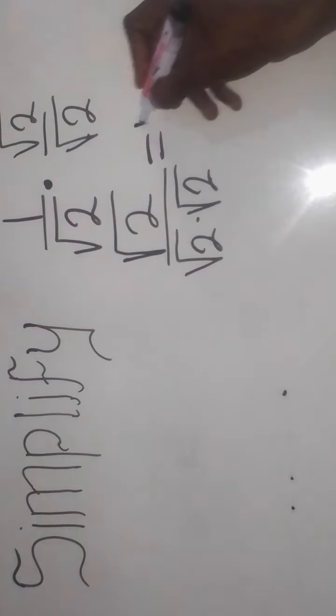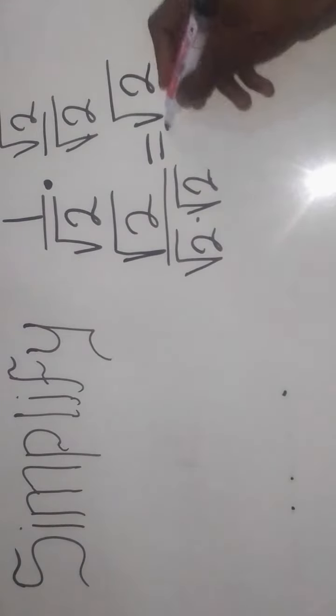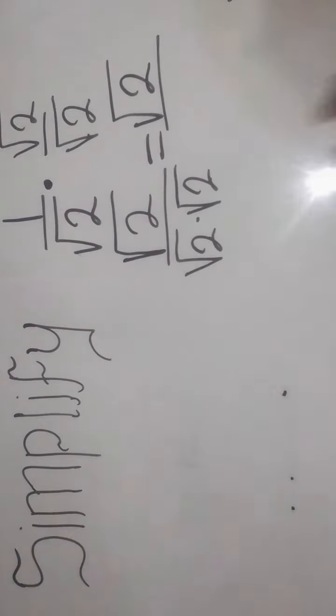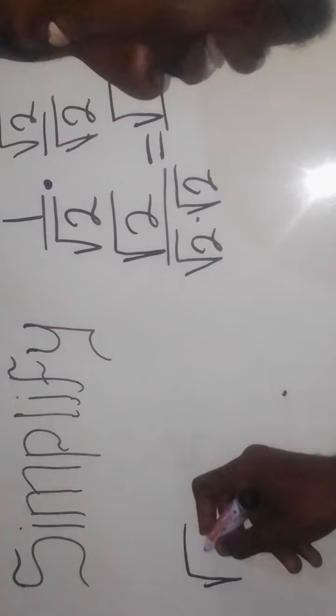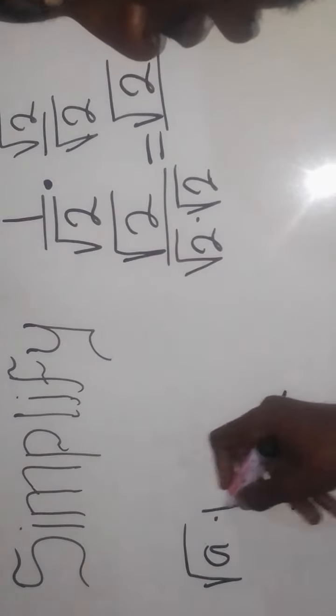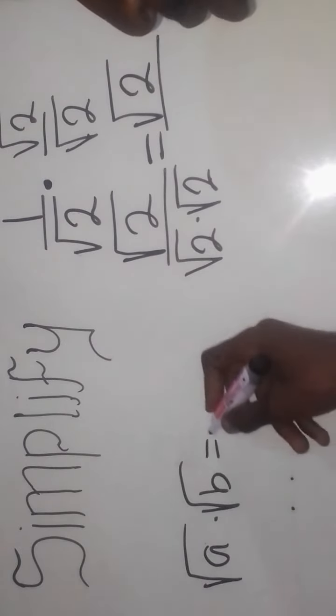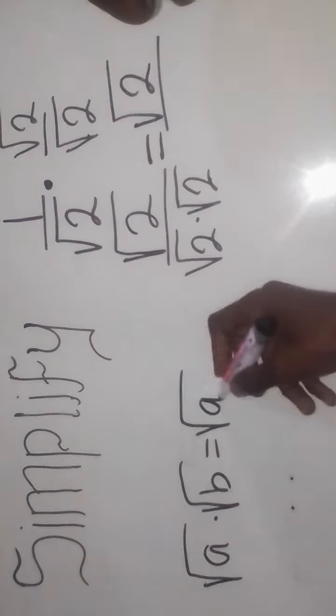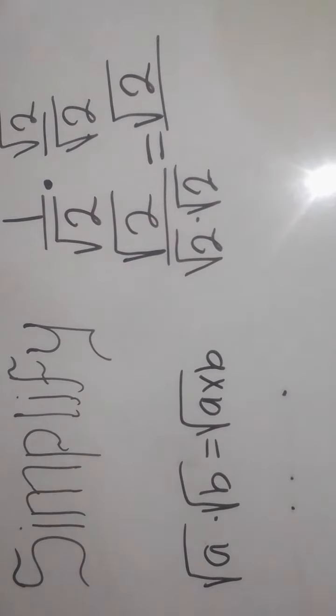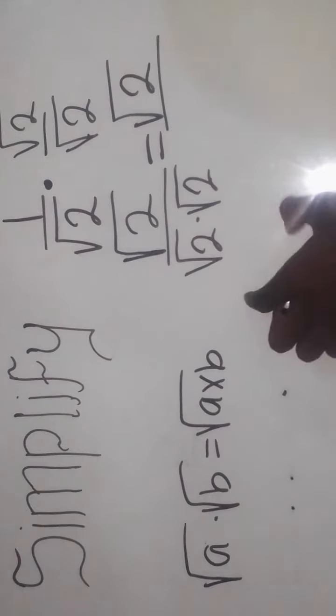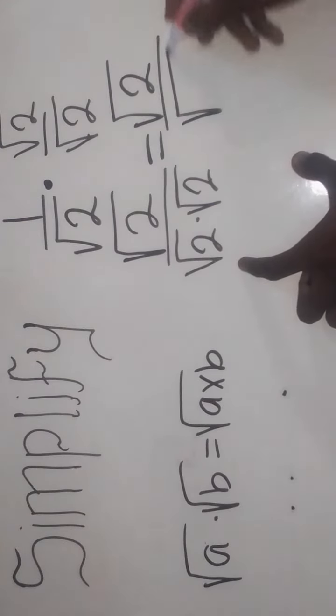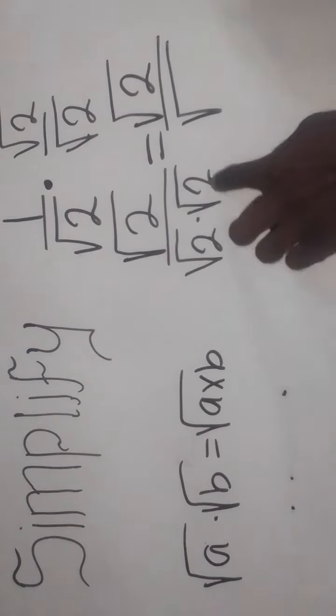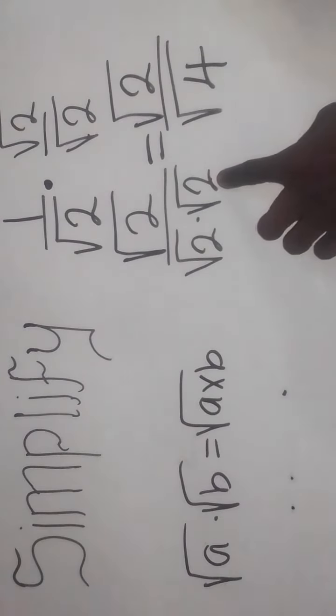Following the laws of surds, which is the square root of a number times this one, it's going to be like the square root of a times b. So following this, you can apply it to this one. So it's going to be the square root here. 2 times 2 is going to give me 4 there.